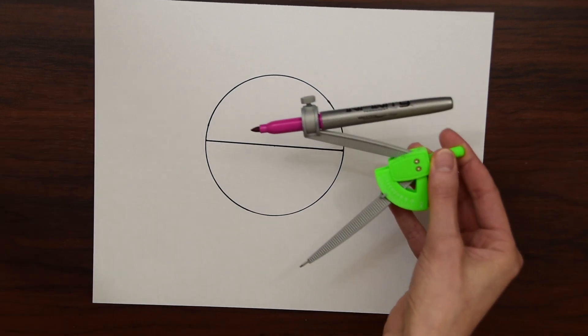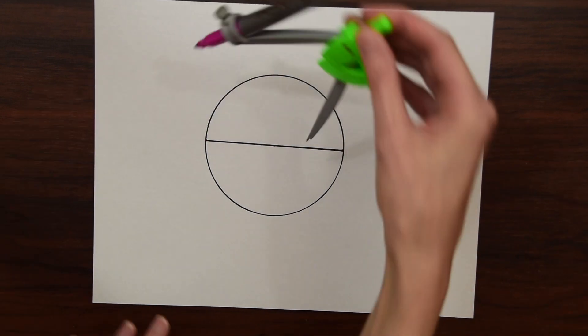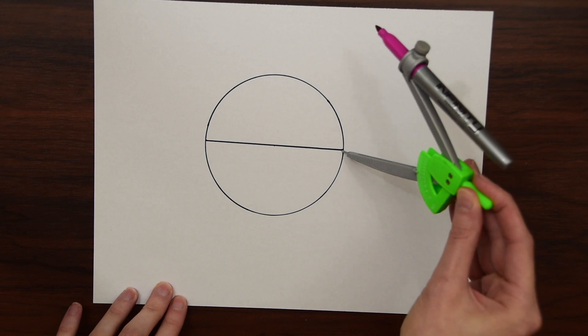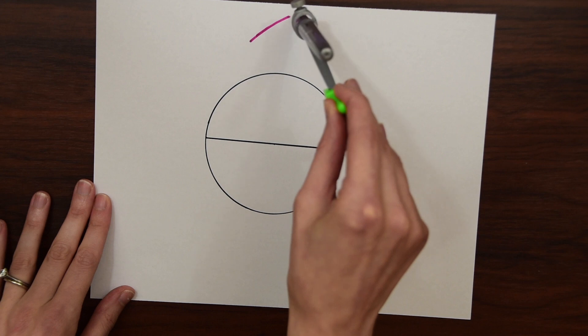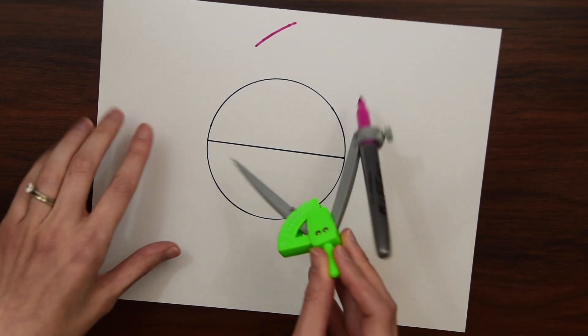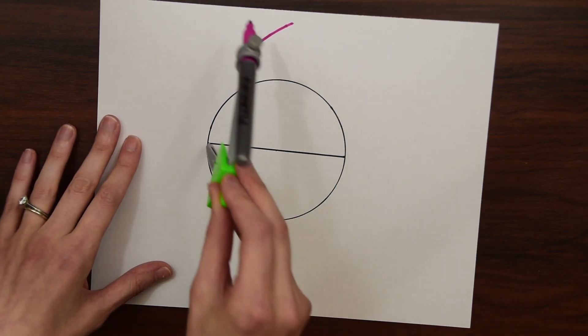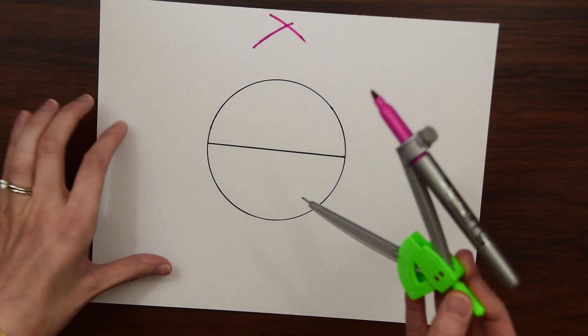So now we have our compass and we're just gonna take the length of the diameter and then take the point to one side and swing it above the circle. Then we're gonna take the point to the other side of the diameter and do the same thing. Notice it makes a little intersection.